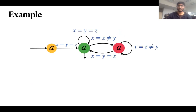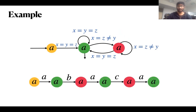Let's see an example. Consider this automaton. It has three states: yellow, green, and red. The yellow state is the initial state and the green state is the final state. A run of the automaton looks like this: we start from the initial state, which has the value A in its register. We read A and go to the green state, and as long as the value stays A we remain in the green state. If we read something different from A, we go to the red state and stay there until we see a value equal to the register. So this automaton recognizes all words whose first letter and last letter are the same.